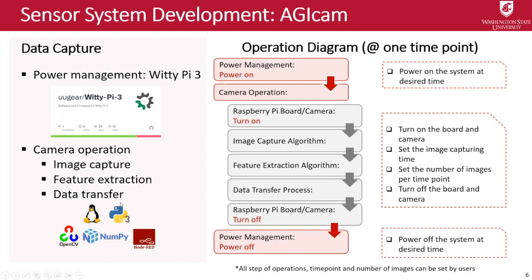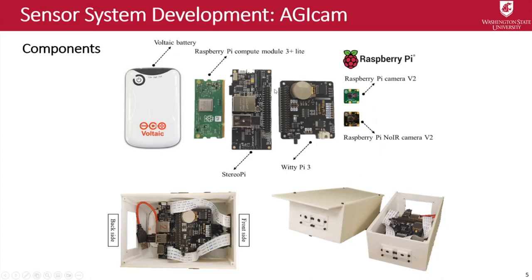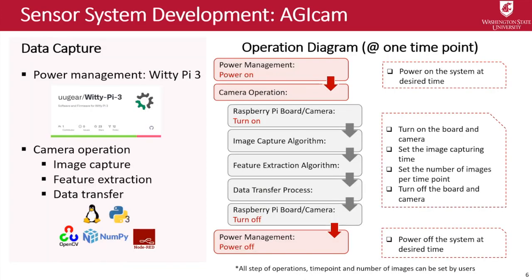We also have an algorithm to transfer the data to the cloud system. Talking about the operation of the camera at one time point: the camera turns on automatically, the capture algorithm operates, then feature extraction extracts the NDVI from the image and transfers the text value — the NDVI value — to the cloud system. Then the camera turns off, and the whole system power is off. This is the complete cycle for one time point, and we have three or four time points per day.